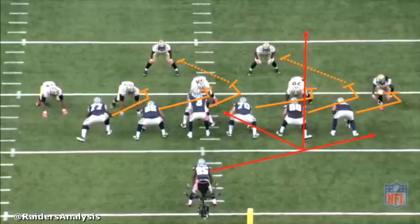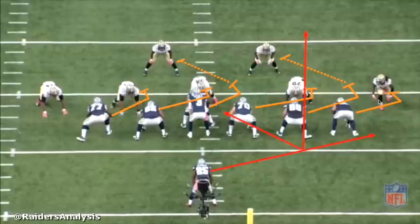First we're going to look at outside zone. This play is against the New Orleans Saints, a historically bad defense in 2015, but it still illustrates how an offensive line can dominate a defensive front by working in unison. Each lineman is going to step to the play side — in this case to the right — and they're either going to reach or run depending on the alignment of the defense.